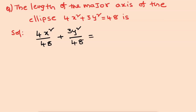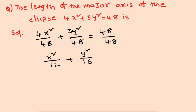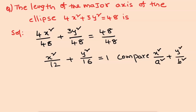Dividing both sides by 48, we get x squared by 12 and y squared by 16 equal to 1. Comparing to the standard equation of the ellipse: x squared by a squared plus y squared by b squared equal to 1.